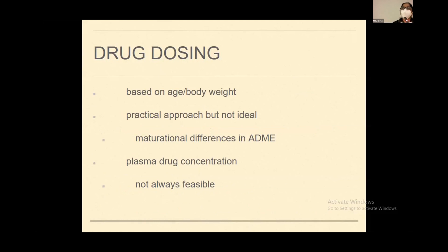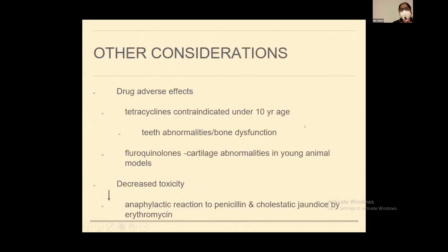Drug dosing is mainly a practical point because we cannot consider each and every factor individually — that would be ideal but is practically quite difficult. Most often we use age or body weight. Maturation differences, which we have already seen, must be considered. The ideal way is to give the antimicrobial and then check the plasma drug concentration, but this may not be feasible in daily routine. We also have to know that certain drugs have adverse effects, and some can actually have decreased toxicity in children.